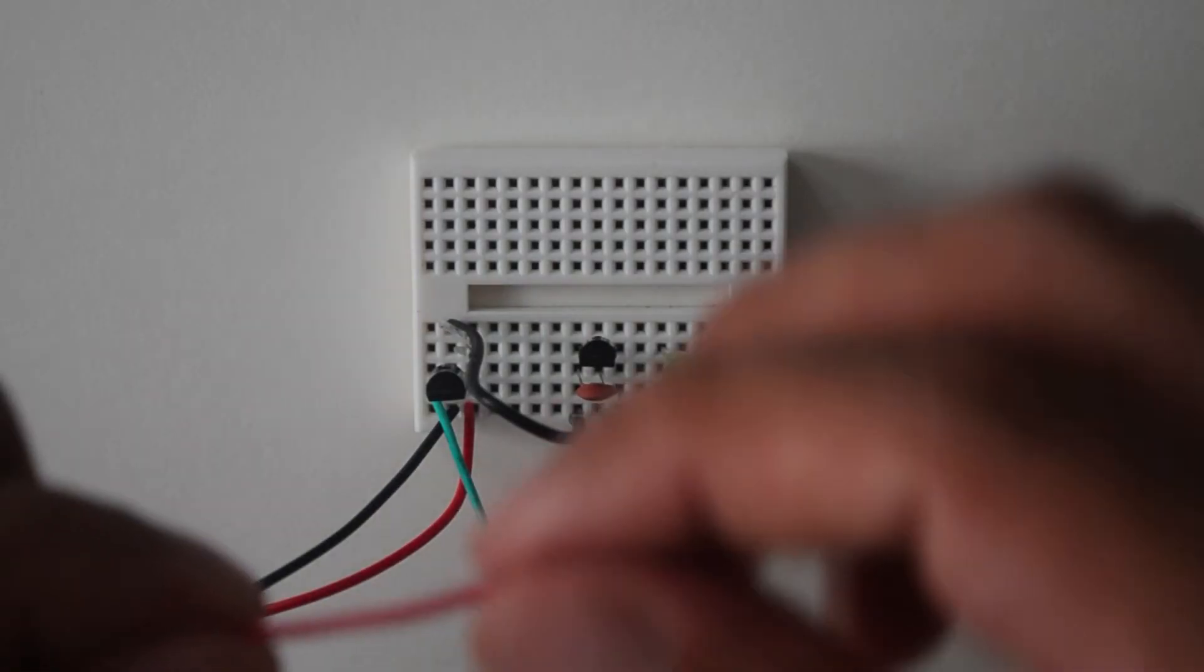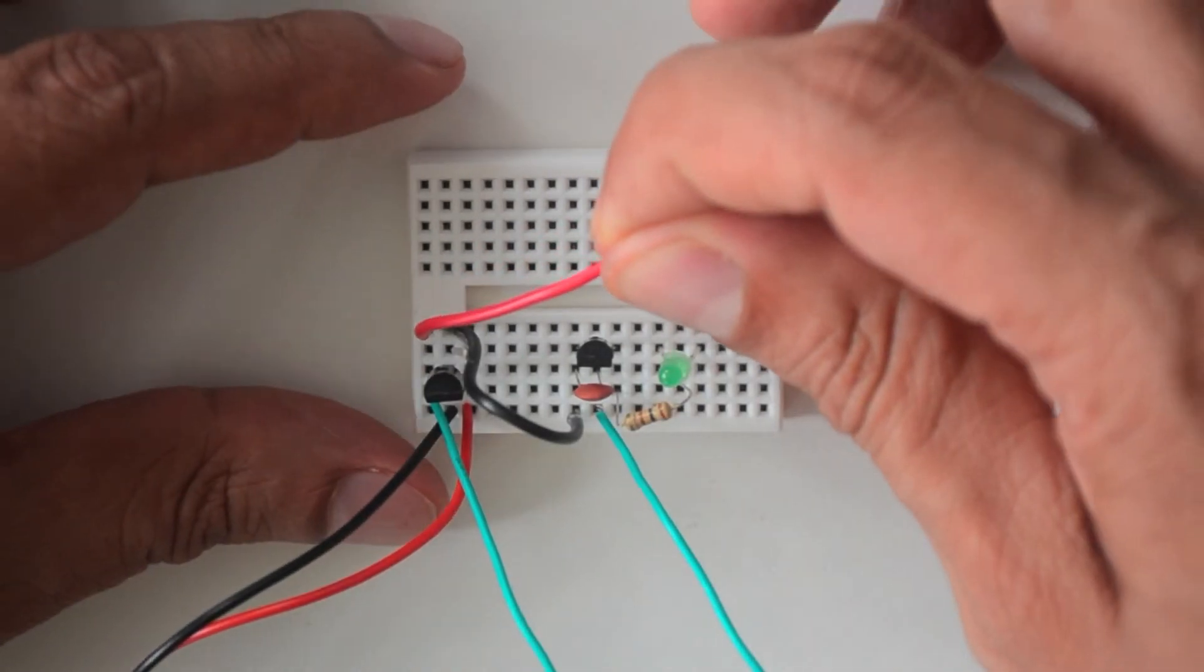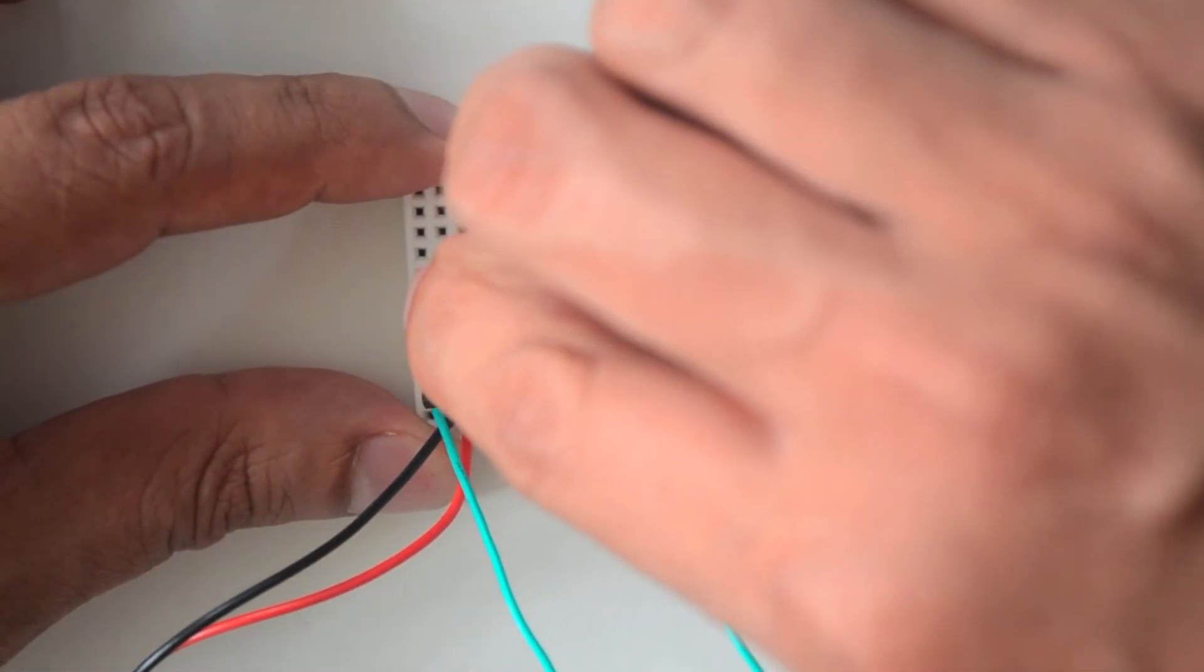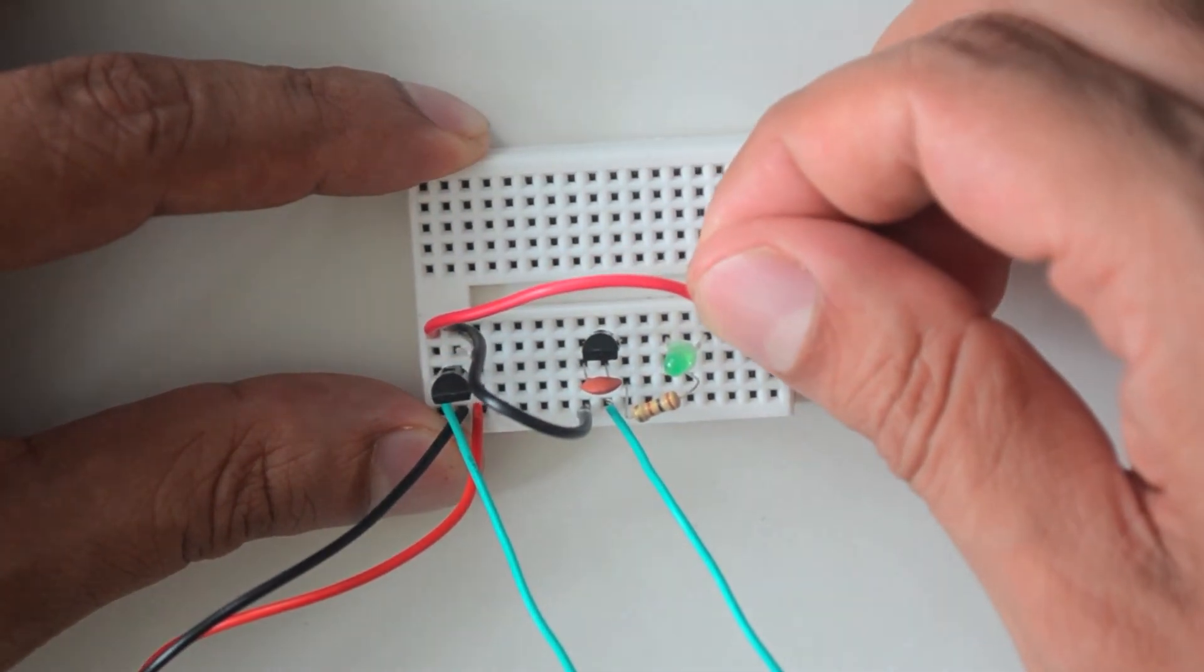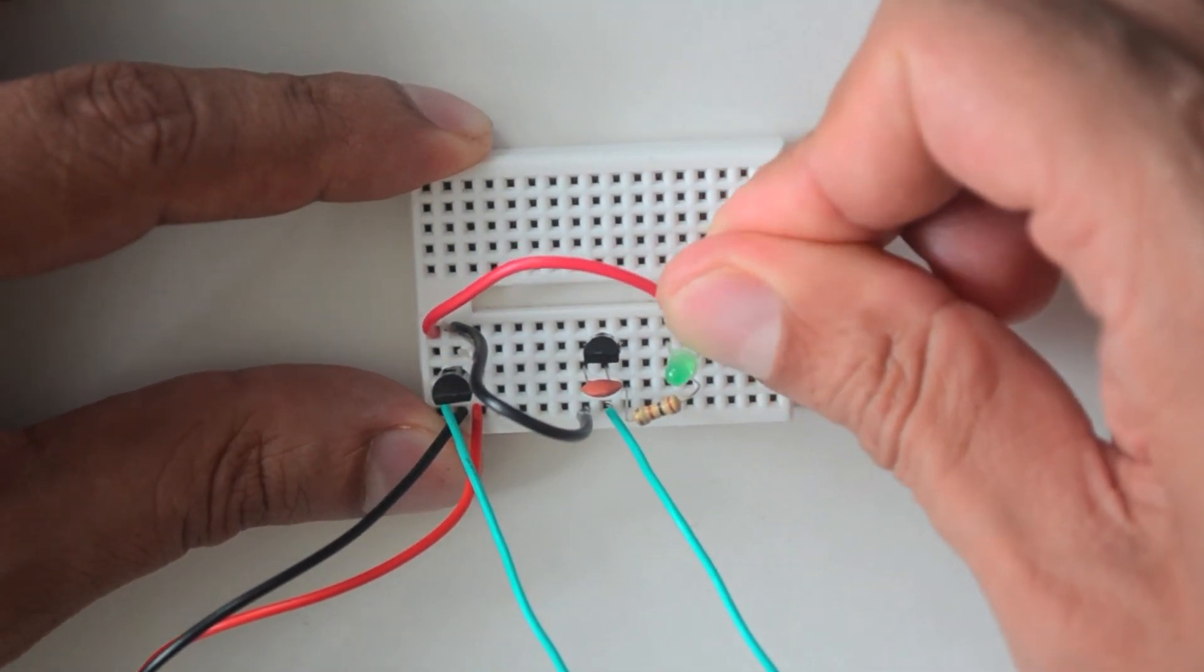Take another wire about two inches long and place it in a pin hole just above the leftmost pin of the voltage regulator. Connect the other end of this wire to the fourth pin hole of the first row of the lower right side of the breadboard.